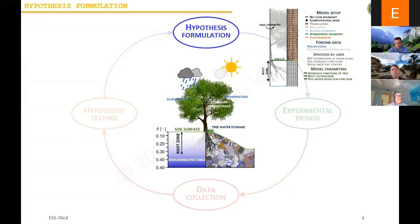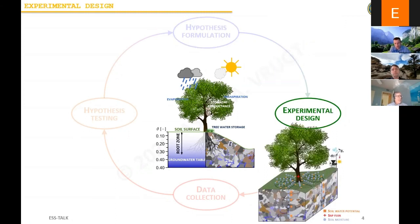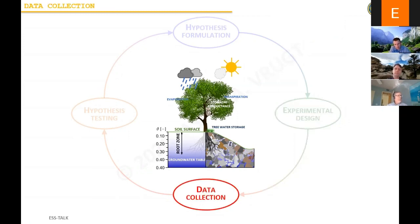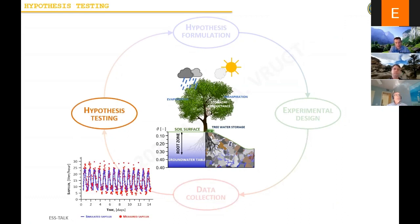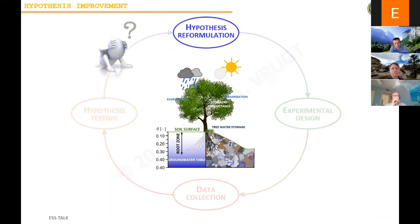After we have our data, we proceed with hypothesis testing — we look at our model, look at our data, and try to learn something, because the ultimate goal is hypothesis reformulation, which is most difficult. In this example, our model is a model of the tree and the roots. Our data collection includes soil water potential, sap flux in the tree, and soil moisture measurements. Our hypothesis testing involves looking at what the model predicts versus the measured sap flux. We see a systematic mismatch, particularly at daytime — the measured sap flux seems to go a little higher than the simulation. So the question is: what is wrong in the model?